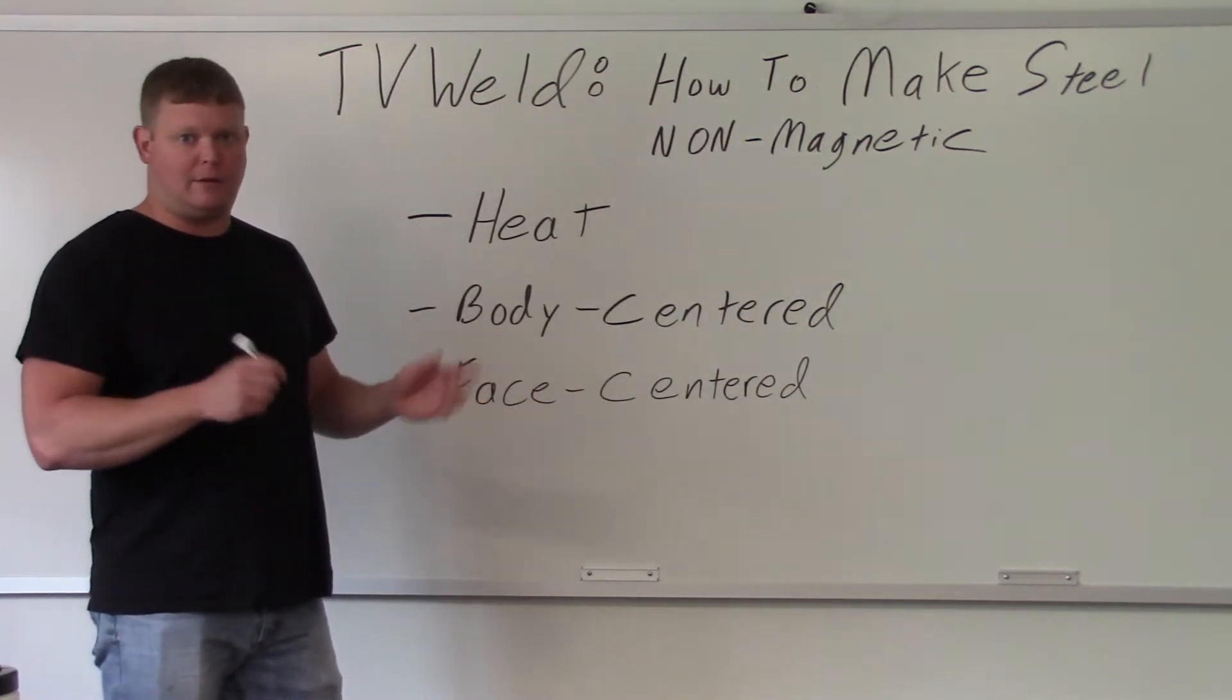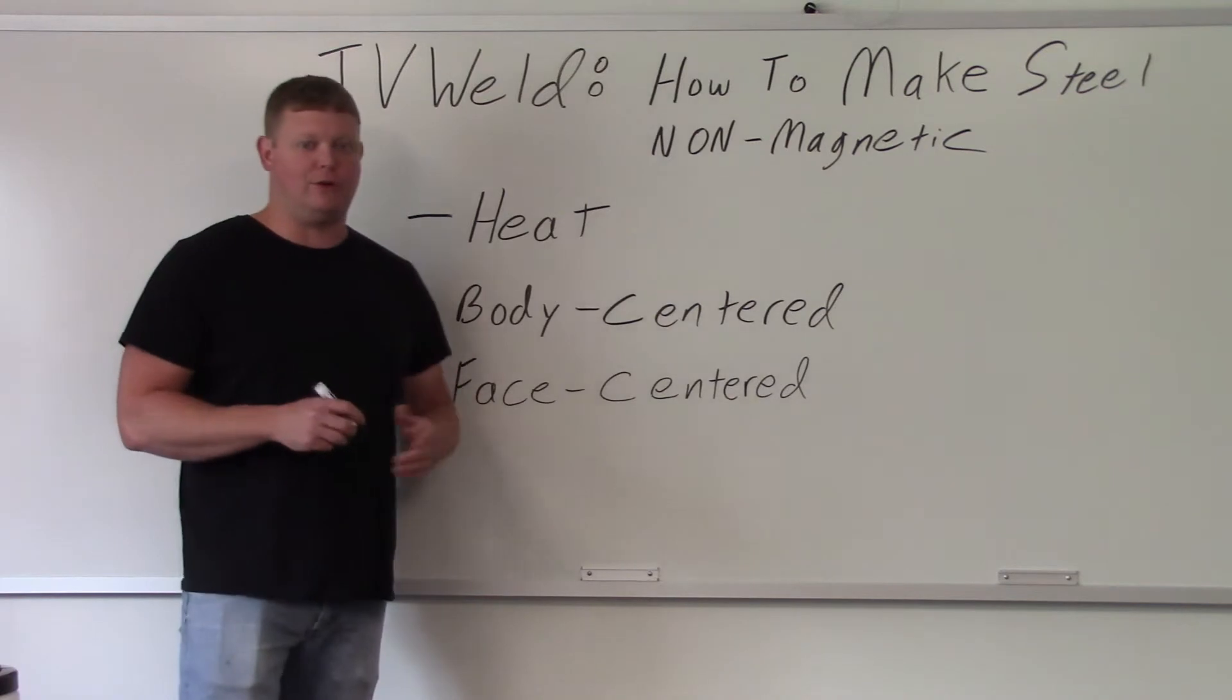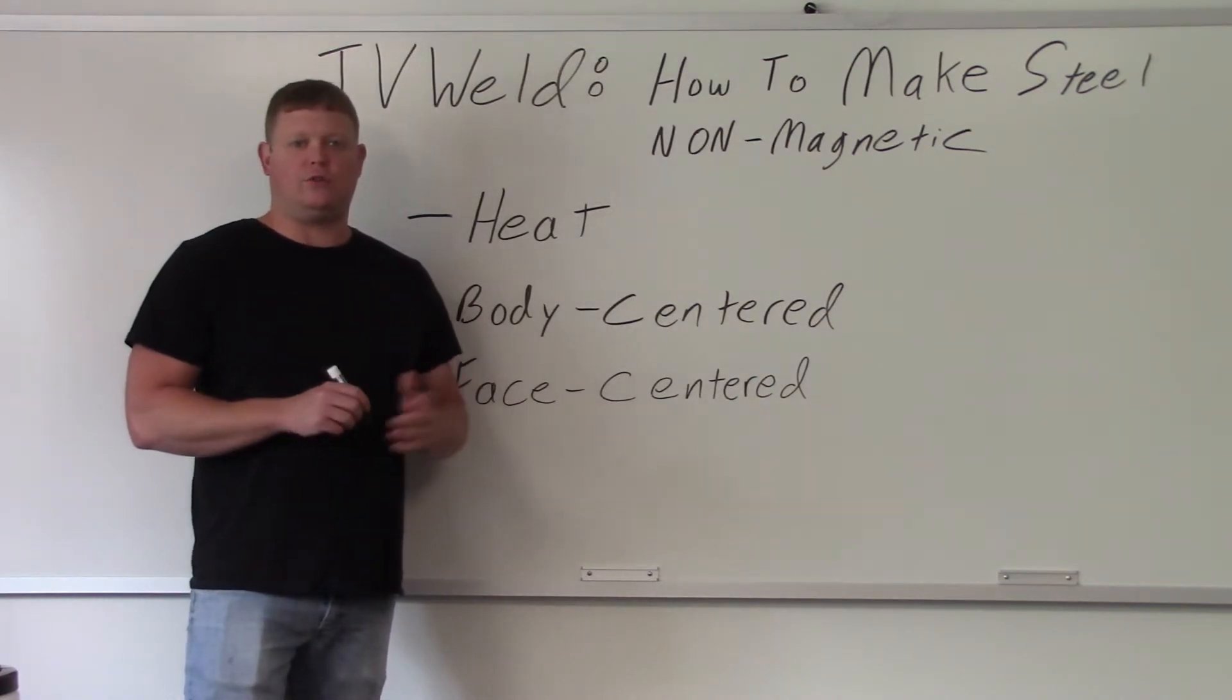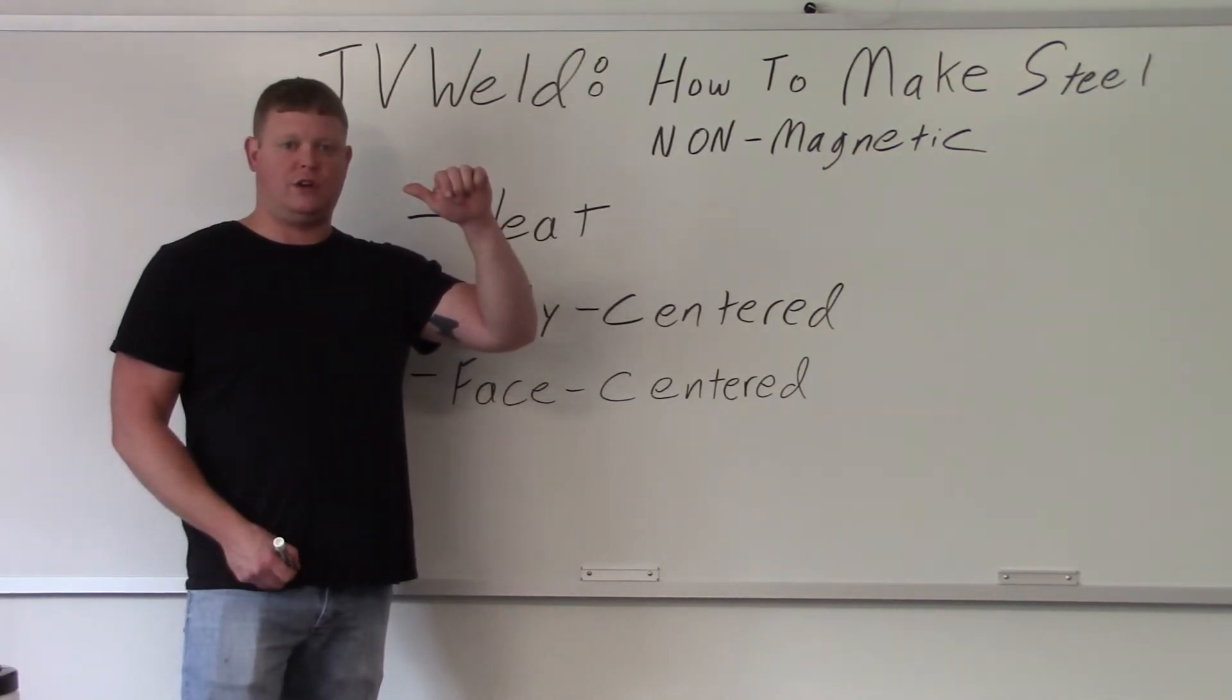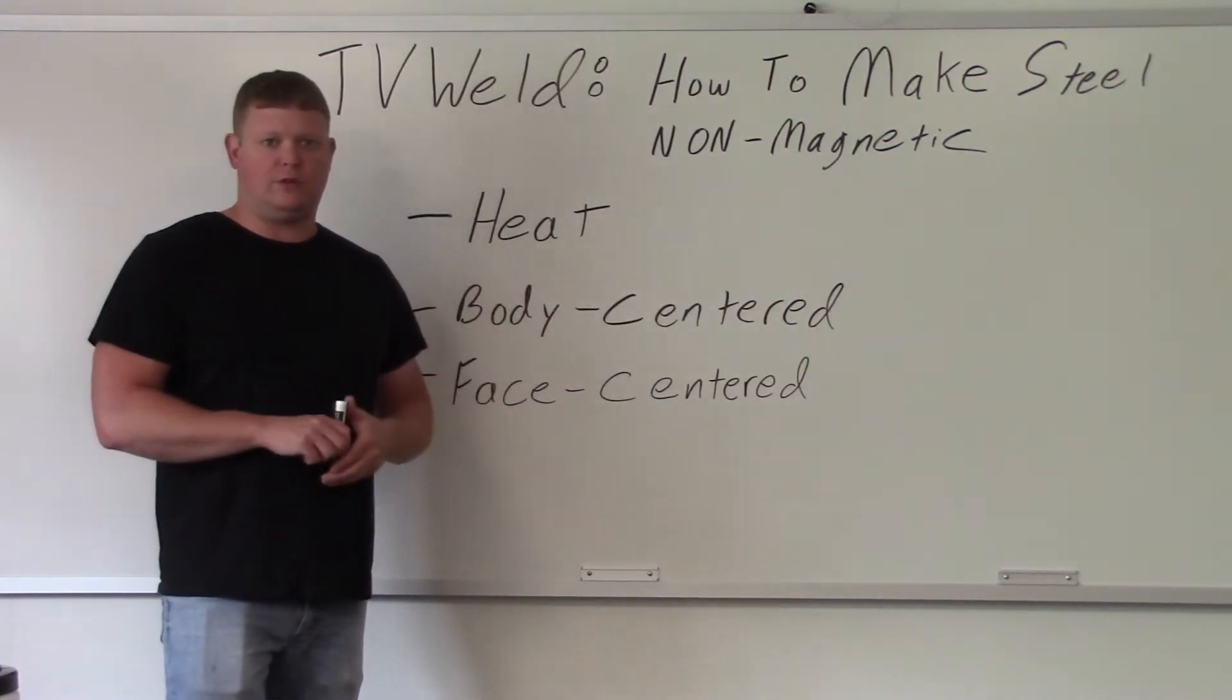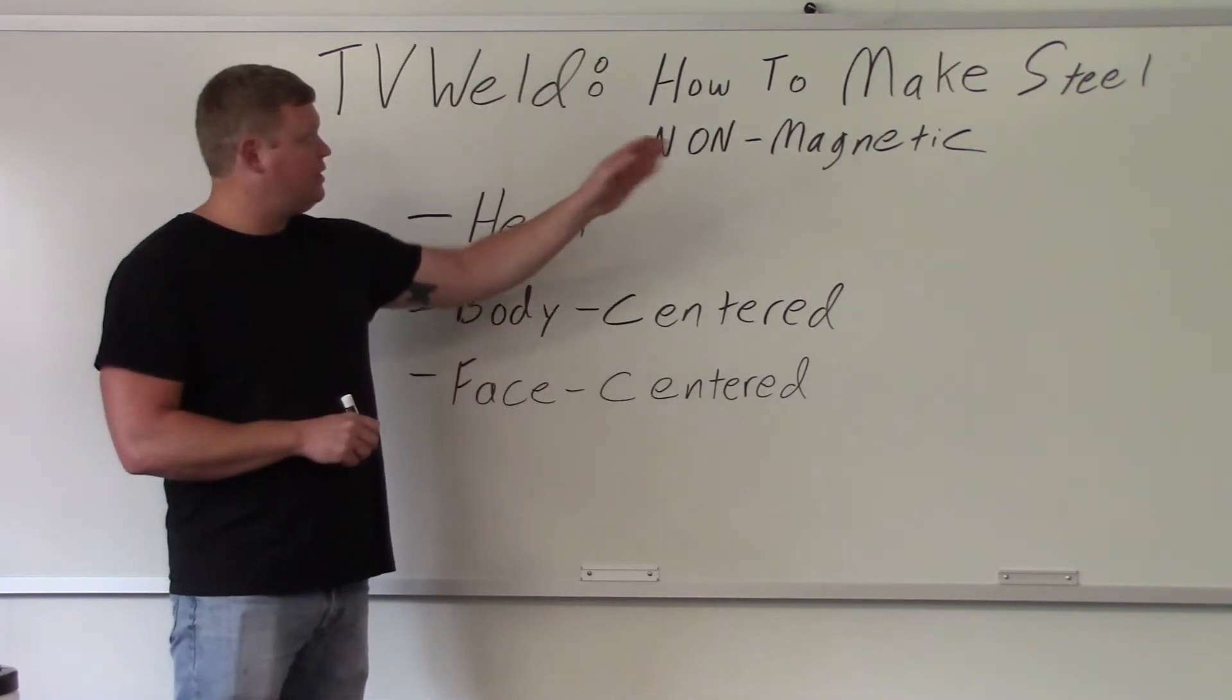So to show this phenomenon, all you have to do is heat up a piece of steel until it gets to about 1600 or 2000 degrees and it's going to fall off. So it's really easy to show you. We're going to go out in the lab and we're going to do this and you can see how to make steel non-magnetic.